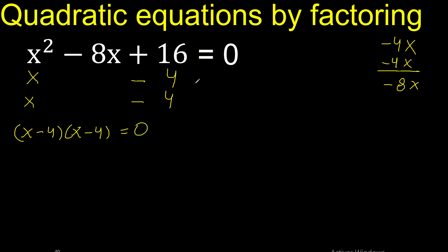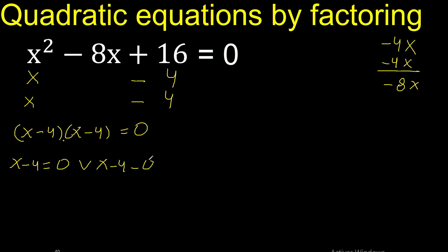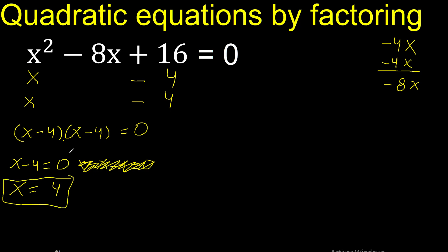Equal zero. By the zero product property, this factor equals zero or this factor equals zero. Therefore, eliminate and change the sign: x equals plus 4.